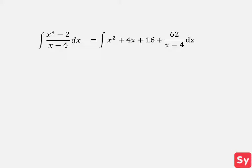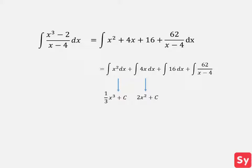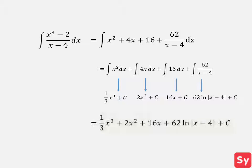So we substitute that into the integral. Next we use the sum rule to split the integral into 4 integrals. We solve each integral, then add them all together and get our answer: one third x cubed plus 2x squared plus 16x plus 62 ln of x minus 4 plus C.